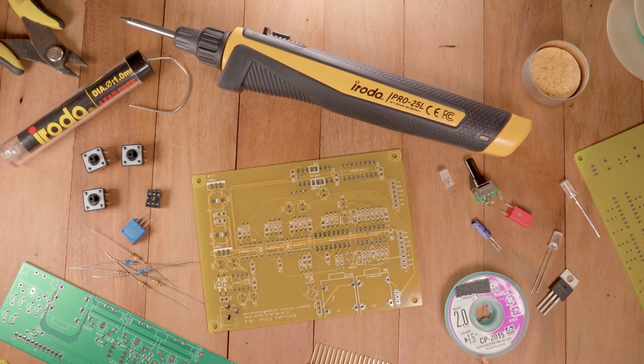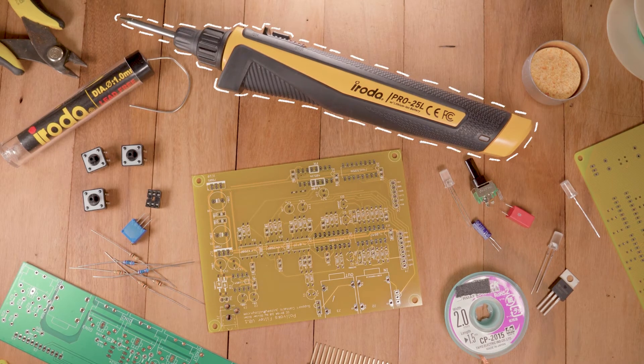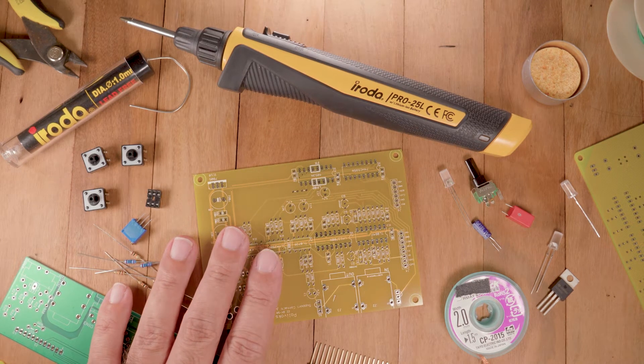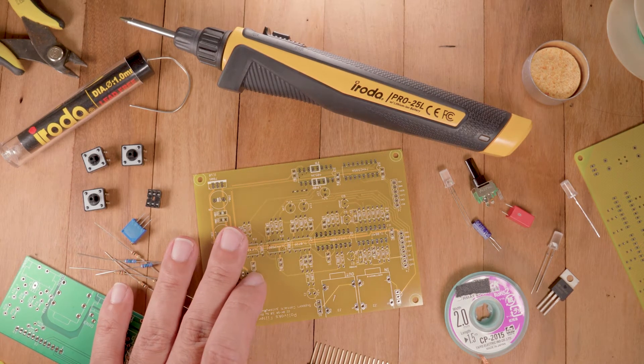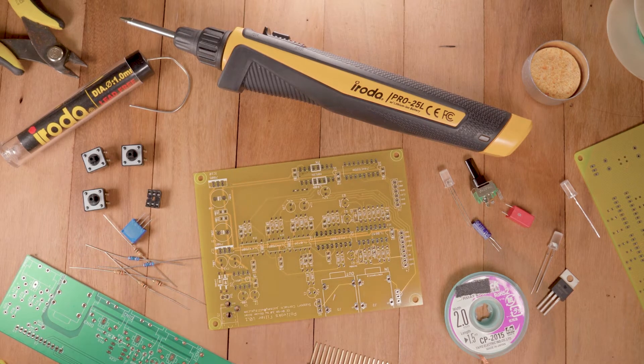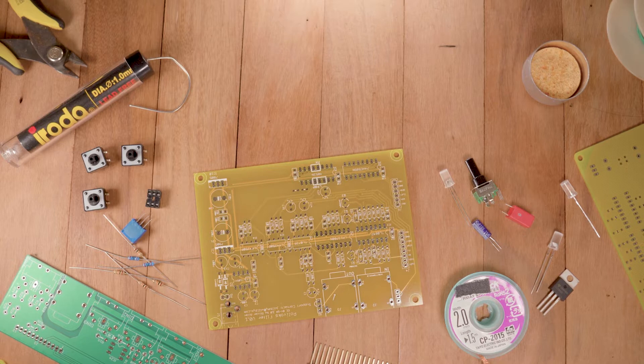Now, in this video, I'll be using the iRota Pro 25L cordless soldering iron. Soldering through-hole components and circuit boards tends to be something that people feel a bit intimidated to try, but I will just say this, it is super easy.